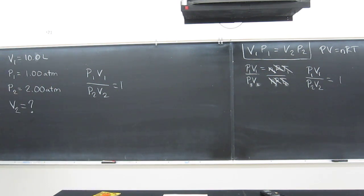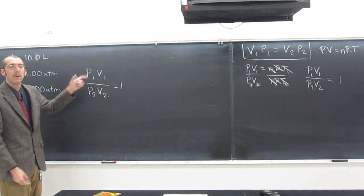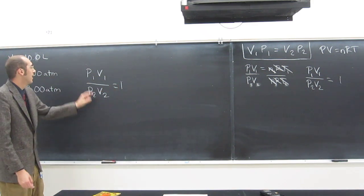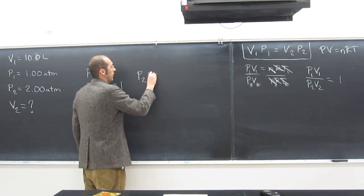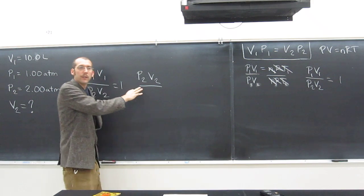So we could do a couple of things. I think the easiest thing to do is just flip both of the sides over, okay? If I flip this over, what do I get? I get P2 V2, right? Is everybody cool with that?